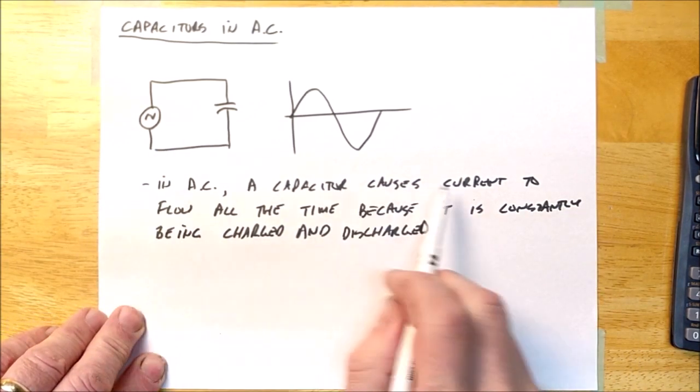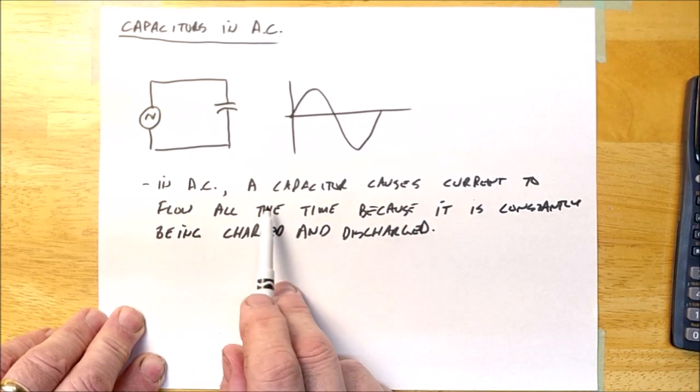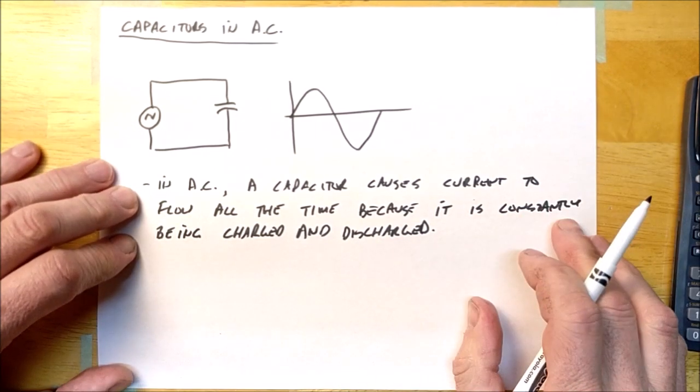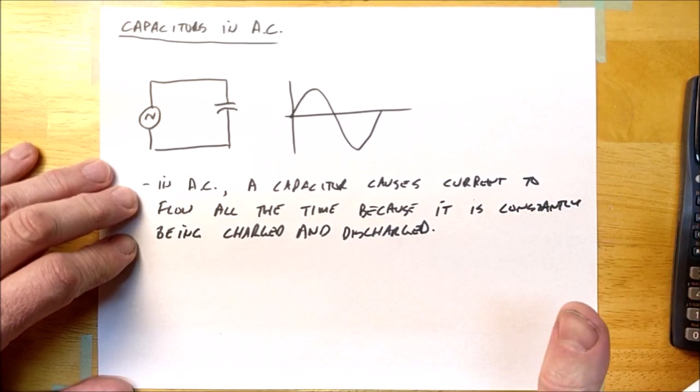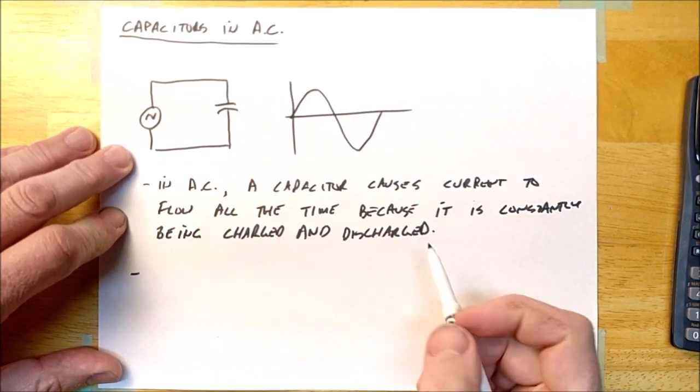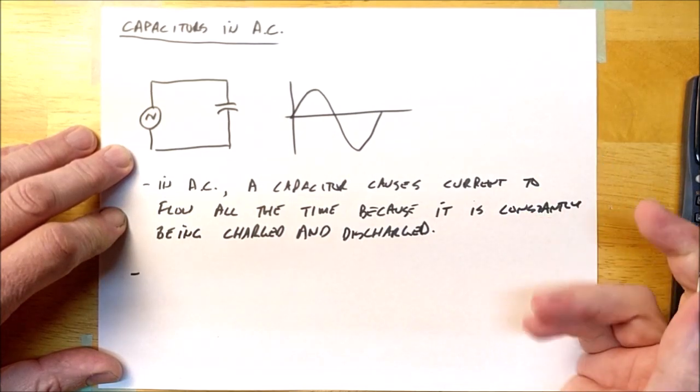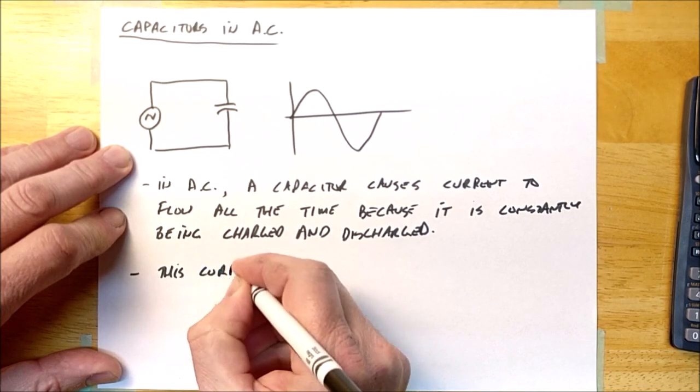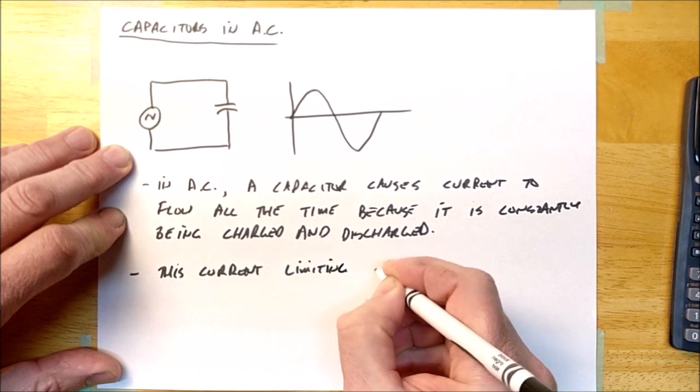So now, if a device in a circuit causes current to flow all the time, then another way to put that is that it limits current. Just like a resistor, if I put it in a circuit, it causes current to flow. I also say that a resistor will limit current. And so the next note I'm going to write about this is that this current limiting effect is known as capacitive reactance.